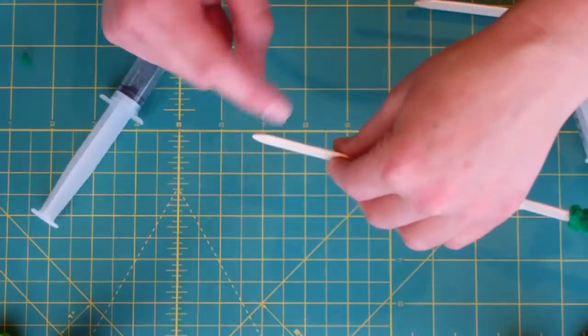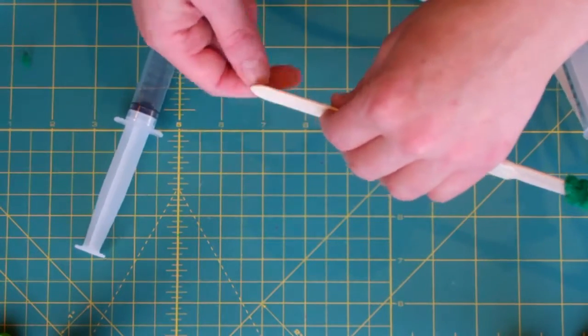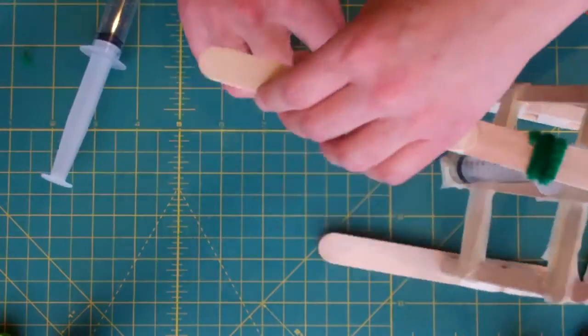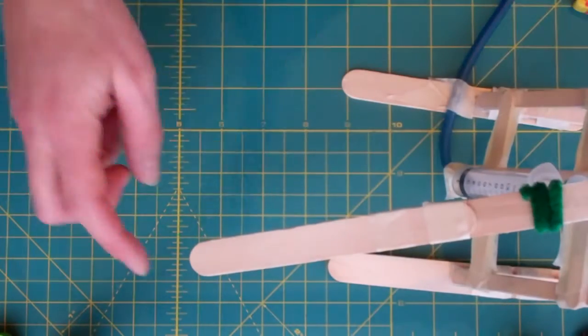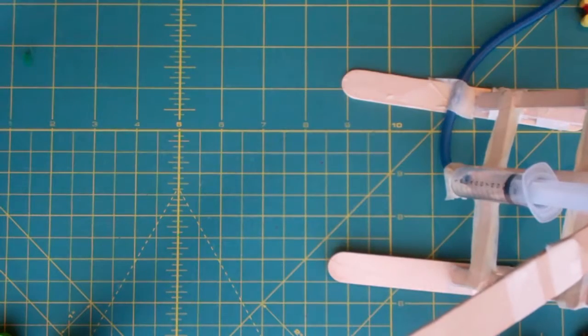So there's various options. You could attach some string or some pipe cleaner with a little bucket, and it could be a crane. So you could lower the bucket to the ground, load some things into the bucket, and lift them up. It's a simple crane.